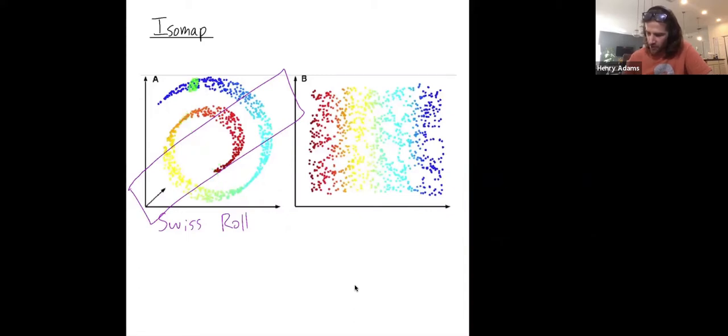And I would have some of these dark blue points collide in the plane with some of these light blue points. So I'm destroying some of the patterns in this data set if I just collapse this Swiss roll down to a plane. I just smush it on top of itself.